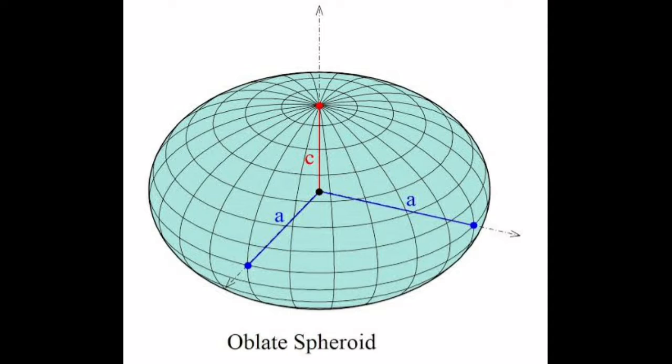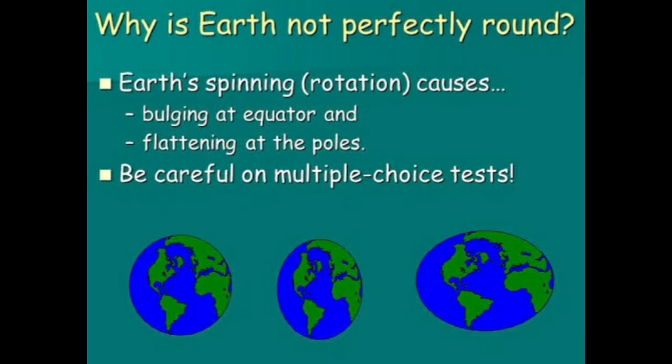It is instead more like a slightly squashed sphere called an ellipsoid. An ellipsoid looks like a basketball when someone is sitting on it. Instead of being perfectly round, it is squashed down from top to bottom and bulges out from side to side.